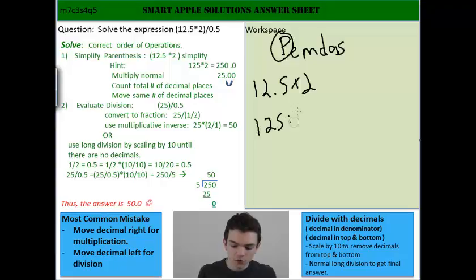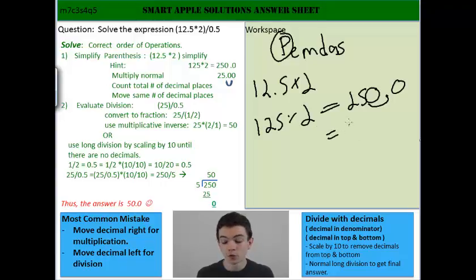So 12.25 times 2 could be treated as 125 times 2, which is 250. And then we can move the decimal place over one place and get our answer. So 12.25 times 2 is 25.